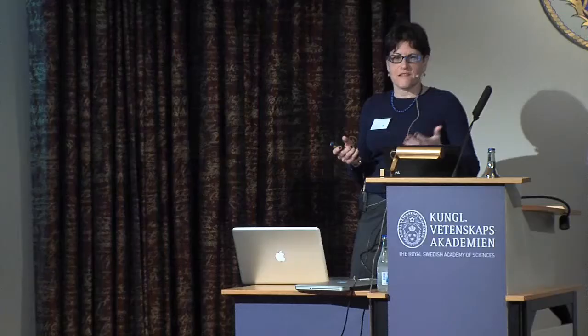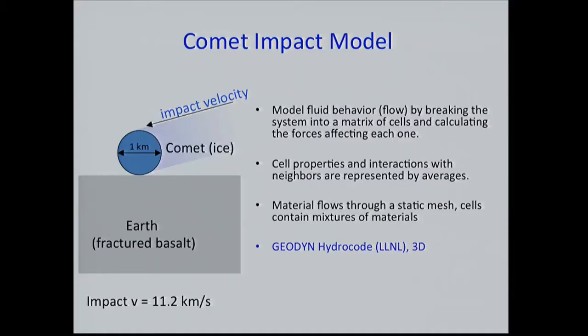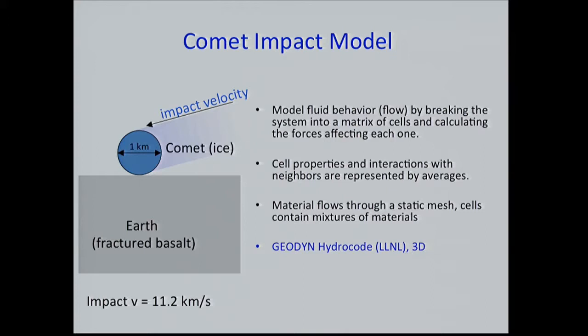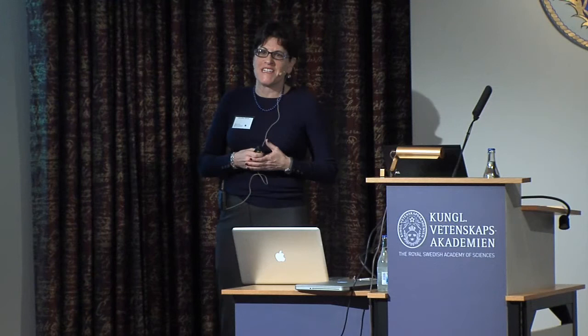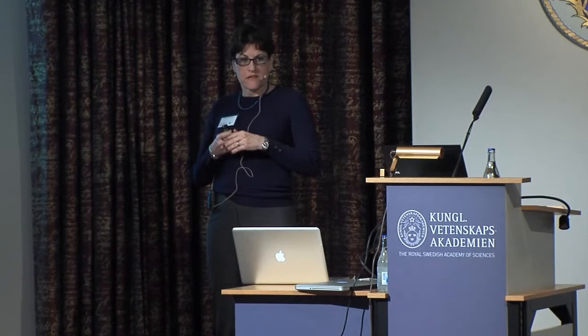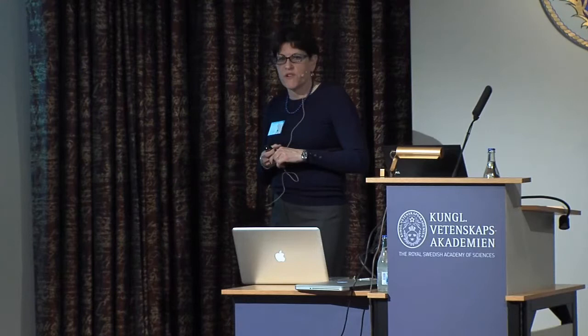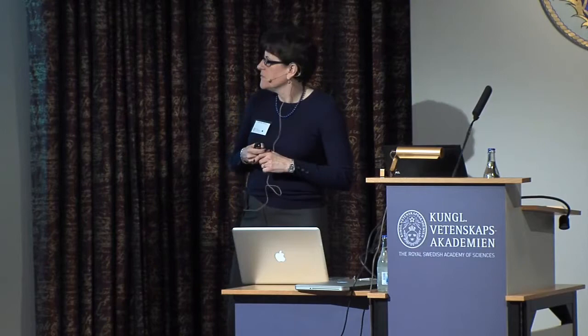In our comet impact model, we set it up to maximize potential for organic compounds to survive. We use simple water ice hitting a rocky Earth. Some classic experiments by Chris Chyba from 1990 modeled a comet ice ball hitting oceans, generating high temperatures and pressures, with the possibility some material would survive — but in the ocean it would be dispersed. Here we focus on the comet-Earth collision to deliver material intact into a liquid puddle that helps concentrate it.